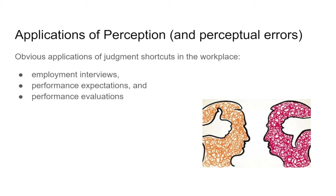We also think about performance expectations — for example, the stereotype that all Chinese people can do math really well. That's an expectation that is probably not right and not fair to impose on somebody. This is going to affect performance evaluations too. If you're a manager tasked with evaluating someone's performance every year, your perceptual biases are going to influence those evaluations.